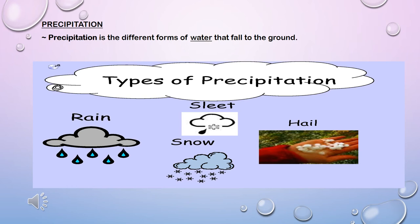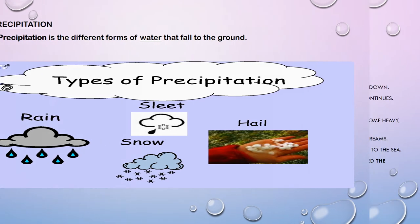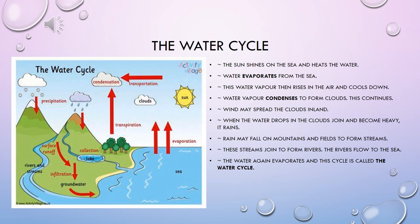Now that you know what these terms mean we can finally learn the water cycle. Take a close look at the diagram of the water cycle. Can you find the terms that we just learned about? Evaporation, condensation and precipitation. Good. Now let's find out how the water cycle works.